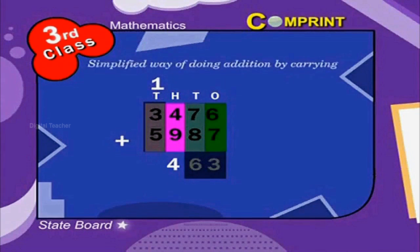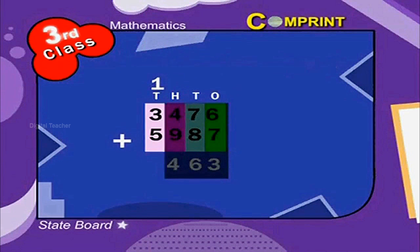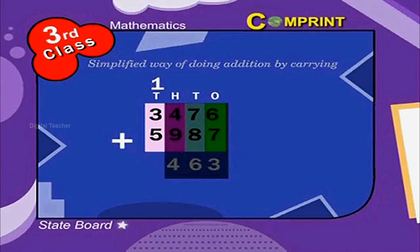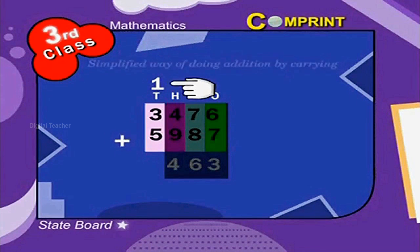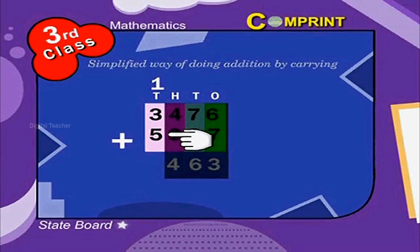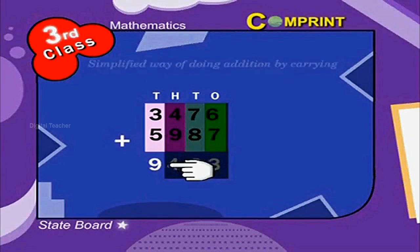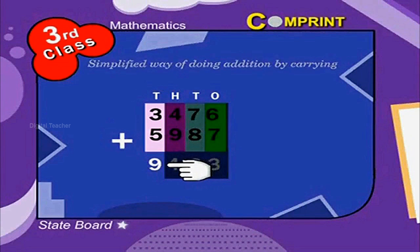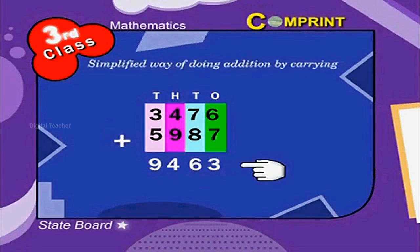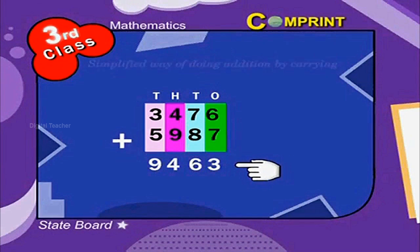Step 4: add the digits of the thousands place. That is, one plus three plus five is equal to nine. So the final answer is 9463.